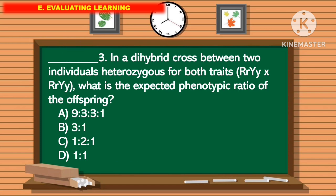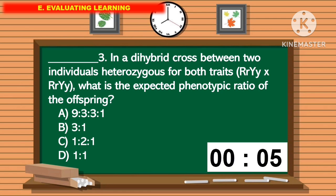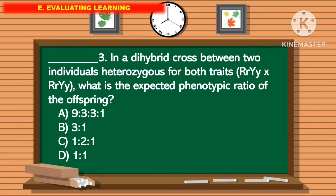For question number 3, in a dihybrid cross between two individuals heterozygous for both traits, what is the expected phenotypic ratio of the offspring? The correct answer is letter A.